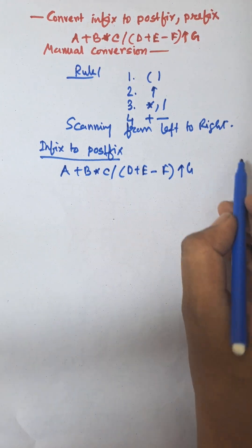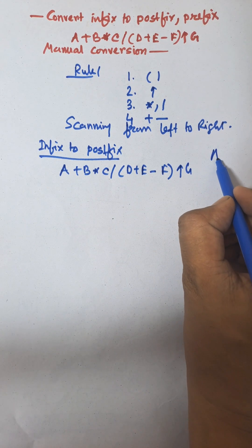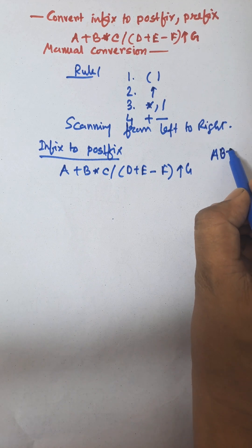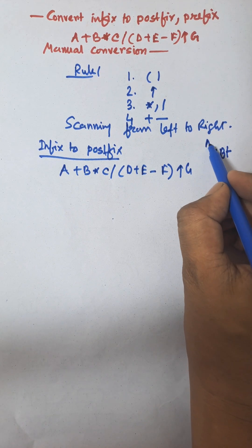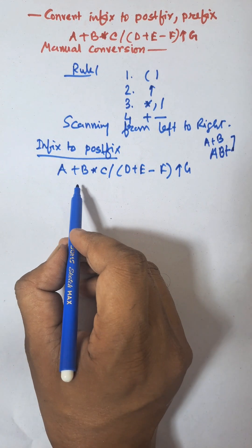Postfix means the operator will be in the last position after the operands. That means A plus B converted to postfix is A B plus.